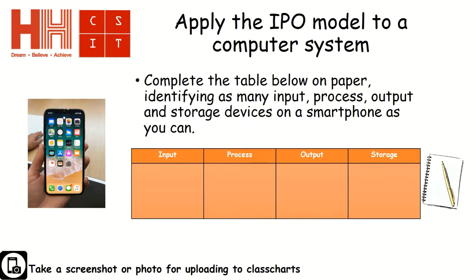For the final task, you're going to apply the IPO model to a computer system. The computer system we've chosen in this case is a smartphone. You need to complete the table on your paper where you identify as many input, process, output and storage devices on a smartphone as you can. You may choose whatever smartphone you'd like to complete this task.